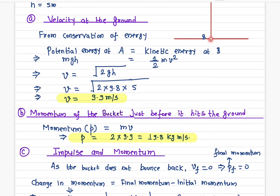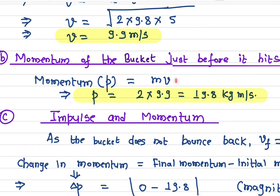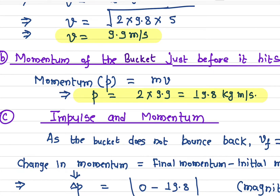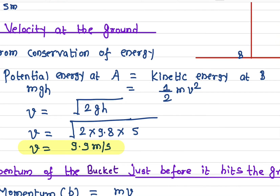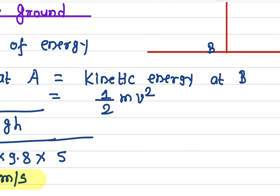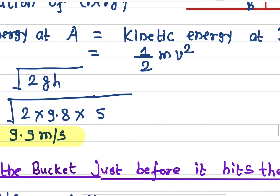The momentum just before the bucket hits the ground — at point B — is simply mass times velocity. The mass is 2 kilograms and the velocity is 9.9 m/s, so momentum = 2 × 9.9 = 19.8 kilogram·meters per second. The direction of this momentum is downward, since the velocity is directed downward.